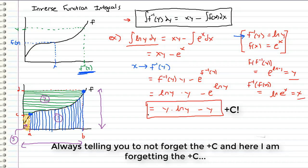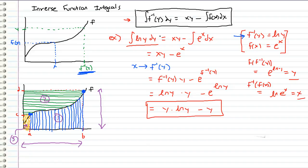So this equals natural log of y times y minus e to the natural log of y, which simplifies to y times the natural log of y minus y. So this is our answer, and it's actually the exact same answer that we got when we did integration by parts. What's pretty cool is that to evaluate the integral of natural log of y, all we had to do was integrate e to the x, which is really, really easy — it's trivial because e to the x is just e to the x. In my opinion, that's a pretty powerful technique.